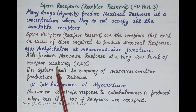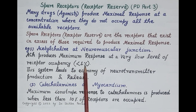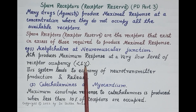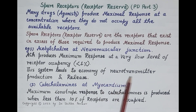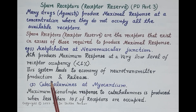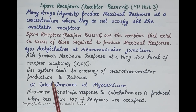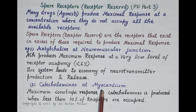Acetylcholine produces its maximum response at a very low level of receptor occupancy. Less than 1% of NM receptors are occupied by acetylcholine, and more than 99% of receptors are left spared. Therefore, a very small concentration of acetylcholine is required to produce maximum response, leading to economy of neurotransmitter production and release.